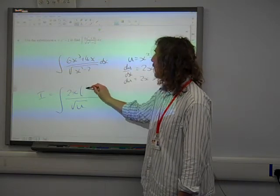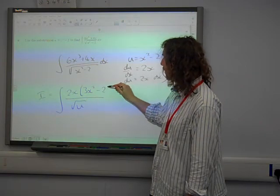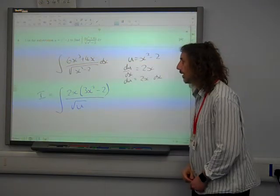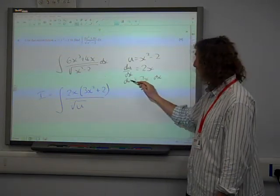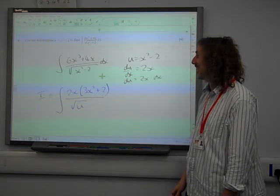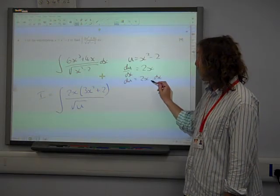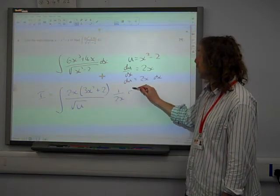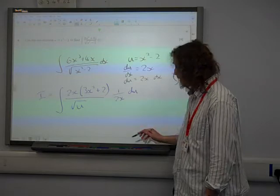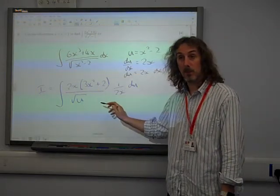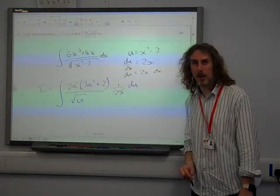It's got 2x as a common factor. Oh, that's interesting. So we get 3x squared minus 2. Is that right? Add. That's fine. And then dx is 1 over 2x du. So the 2x is cancelled out, hasn't it? We've managed to get rid of that 2x. That's brilliant.